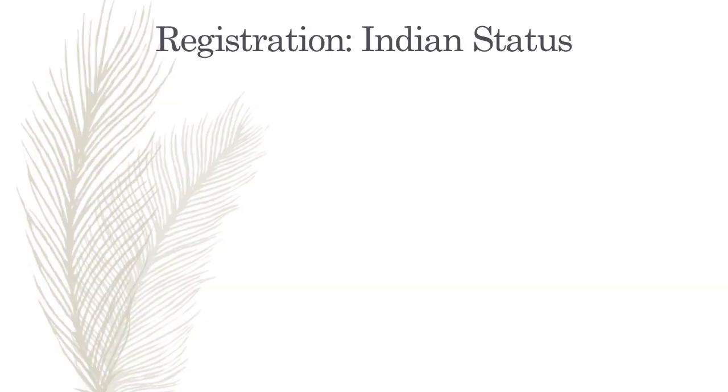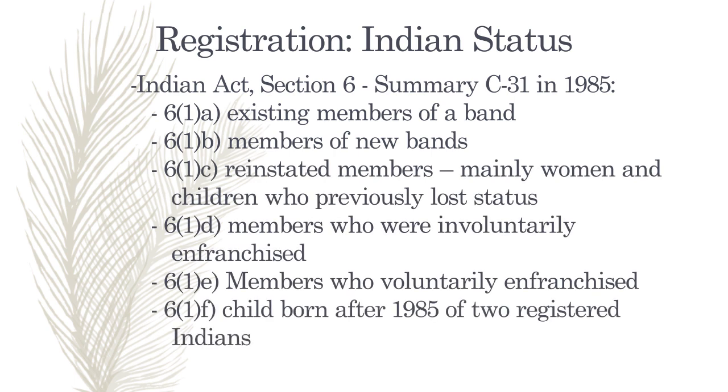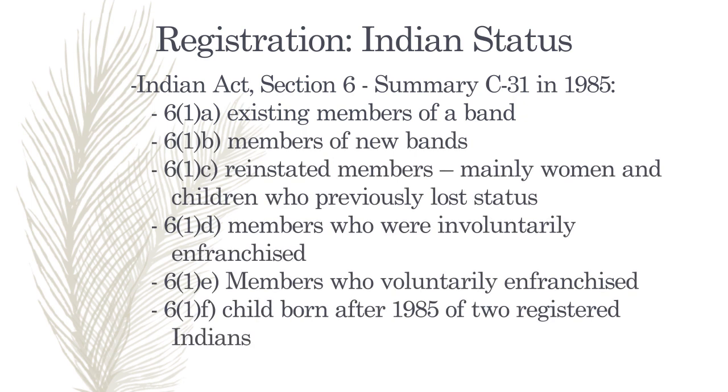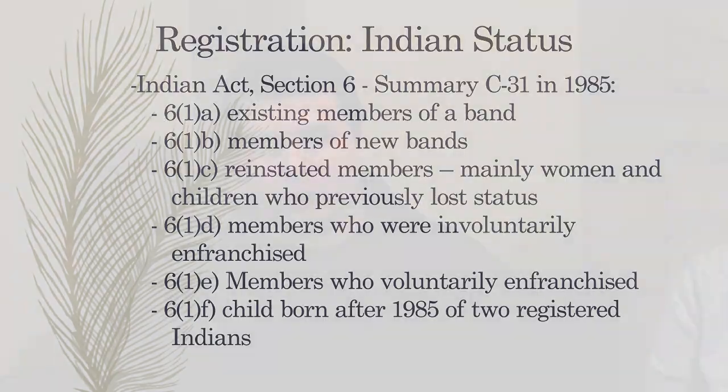So now we'll talk about the Indian Act and Section 6. Bill C-31 was passed in 1985, and the Indian Act was divided into two main sections: 6.1 and 6.2. Section 6.1A was for existing band members; 6.1B for members of new bands; 6.1C for reinstated members — mainly women and children who previously lost their status; 6.1D for involuntarily enfranchised members; 6.1E for voluntarily enfranchised members; 6.1F for children born after 1985 of two registered Indians. Section 6.2 was for a child born after 1985 of one registered Indian. This was the first time Section 6 came to be under the Indian Act.